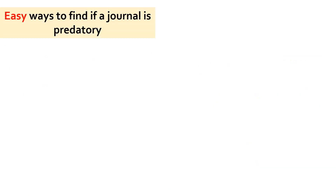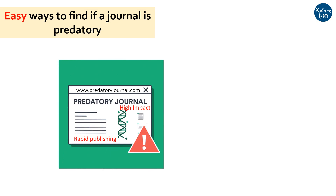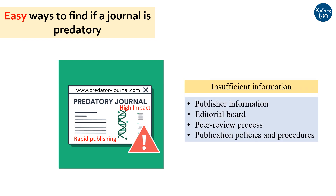Now let's see how to identify predatory journals. Check out the journal's website. A poorly designed, unprofessional website with insufficient information about the publisher, editorial board, peer review process, and policies and procedures of publication suggests that the journal may be predatory. Peer review in a predatory journal is often superficial or non-existent.